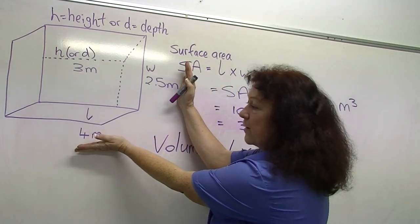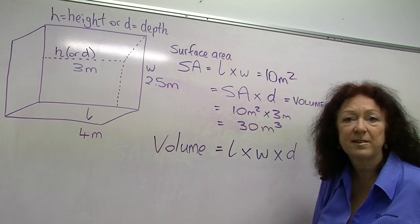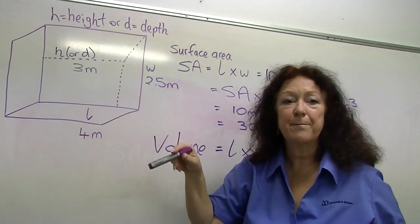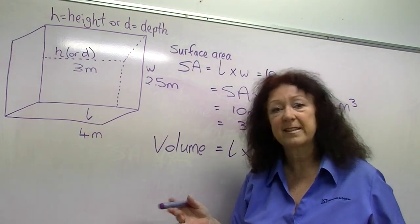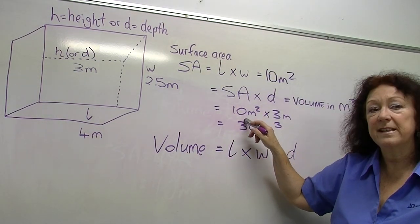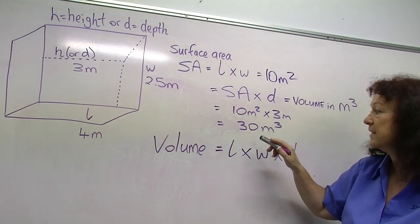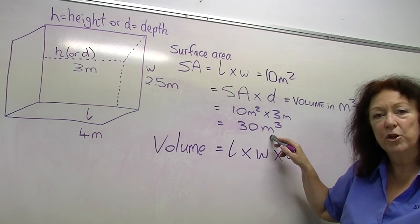If you multiply meters by meters, you end up with square meters. Now all we need to do is multiply that by the depth of our tank, in this case three meters. So that 10 square meter surface area times the depth of three meters, that gives us 30 cubic meters.